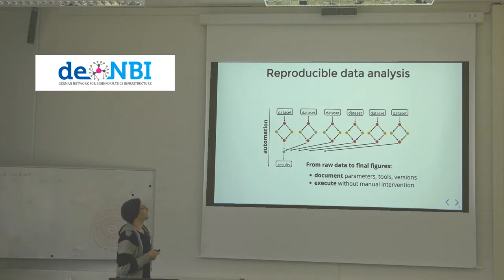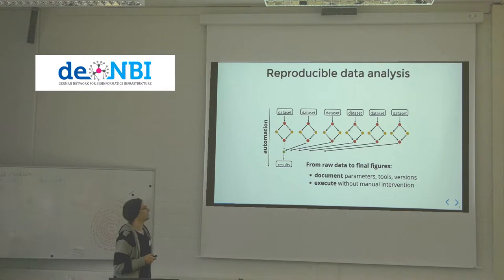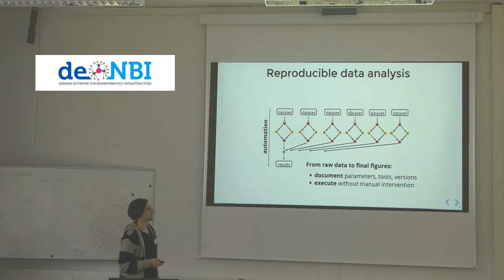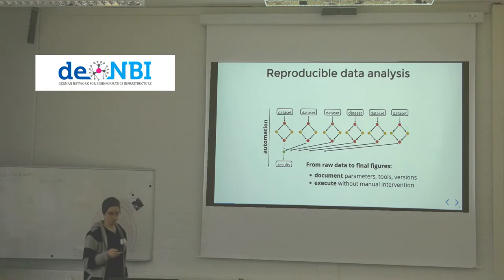First of all, automation — the process of getting from raw data to final figures without manual intervention, and thereby documenting all parameters, tools, and versions that you use.